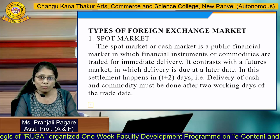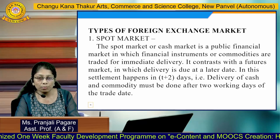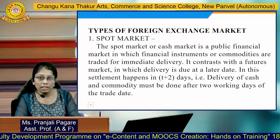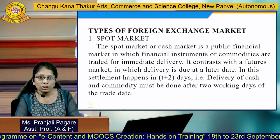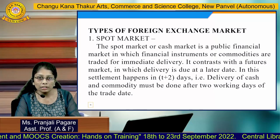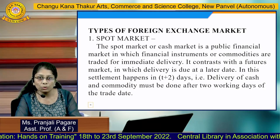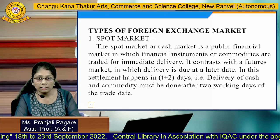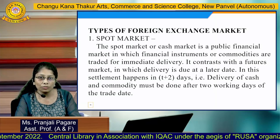We will now look at types of foreign exchange market. The first one is the spot market. The spot market is very important in foreign exchange. The spot market or cash market is a public financial market in which financial instruments or commodities are traded for immediate delivery — that is why it is called the spot market. It contrasts with a futures market in which delivery is due at a later date. Settlement happens in T plus 2 days, meaning delivery of cash and commodity must be done after 2 working days of the trade date.